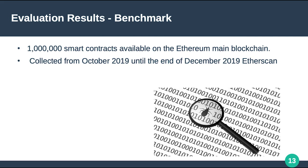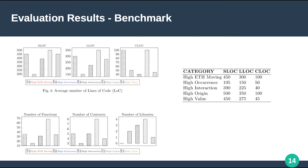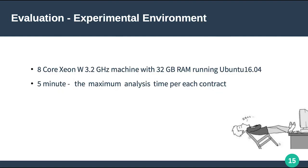For evaluation, we analyzed one million available smart contracts on the Ethereum main blockchain, collected from October 2019 through December 2019 using the free open-source tool Etherscan. The benchmark set details include the average number of lines of code, ETH volume, origin interactions, number of libraries inside, number of contracts, and so on — further details are available in the paper.